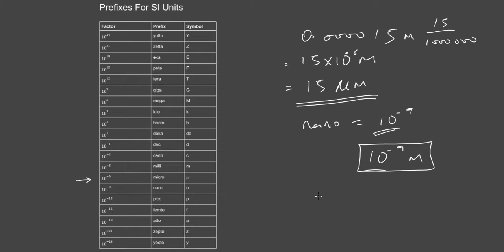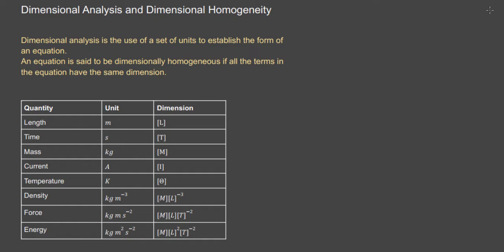Now let's talk about dimensional analysis and dimensional homogeneity. In physics, every equation we reference must have a consistent pattern. Dimensional analysis is a kind of analysis that enables you to establish if the units within an equation have a certain consistency — basically, it uses units to establish the structure of an equation.